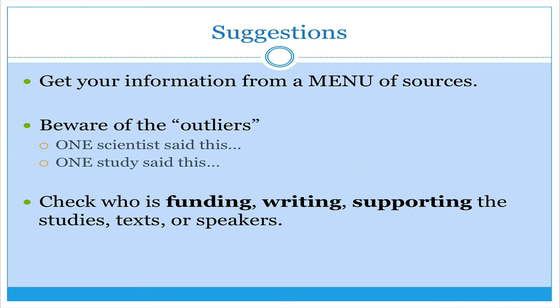Also work to get your information from a menu of sources. If you're getting all of your information from just left-leaning sources, that's going to be a different view of the world than if you get some from the left, some from the right, some from that moderate zone in the middle. Also be aware of those outliers — when you see that one scientist or one study has said something, do some legwork and see if there are other studies that corroborate those seeming outliers. If 99% of scientists are saying one thing and 1% is saying something else, it is somewhat possible that 1% is right — but take a look at the preponderance of evidence. And definitely check out who is funding or writing or supporting the studies, the texts, and the speakers. Make sure we understand who's providing money for certain studies that say sugar is really good for you — that might be a little biased if that study was funded by the American Sugar Growers Institute.